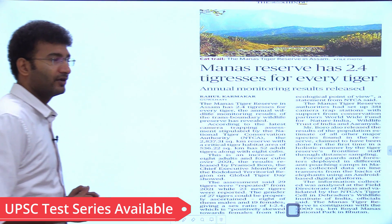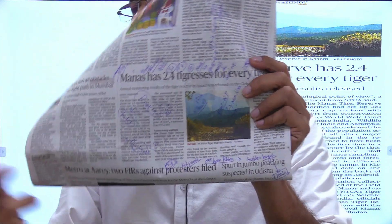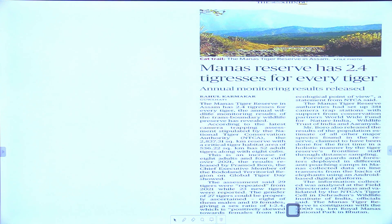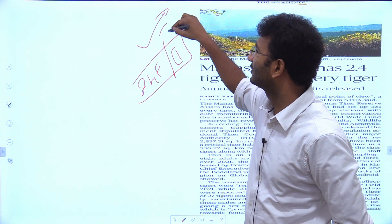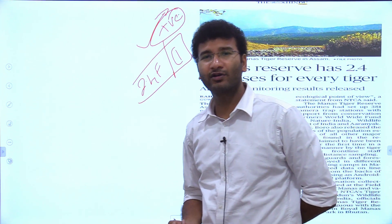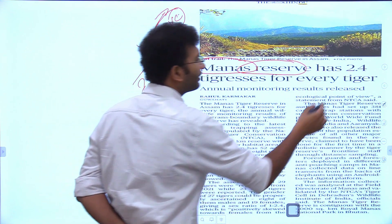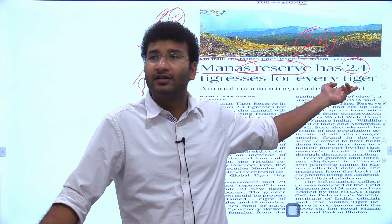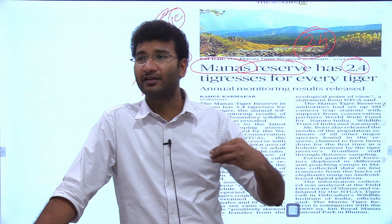The next article is about Manas National Park, which now has 2.4 tigresses for every tiger. This is a positive sign indicating that the tiger population in Manas Tiger Reserve can increase in the near future, since tigers do intrabreeding and more females means more potential offspring. For the examination, we should look at the location: Manas National Park is in Assam, where the Manas river flows through, and it shares an international border with Bhutan.